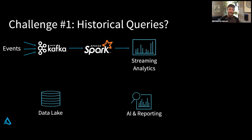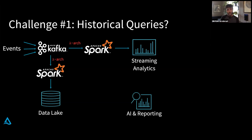I did a bunch of reading on the internet and it seems like there's this pattern called the Lambda architecture. As far as I can tell, this just means you do everything twice. We'll have a streaming system that computes stuff in real time, and a batch system that stores data and computes it asynchronously. Fortunately, Spark has unified APIs for streaming and batch, so it's relatively simple to do this — but it's still two sets of programs and schedules and errors to deal with.